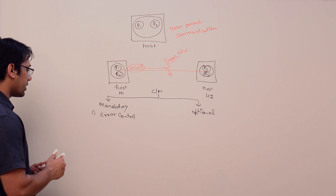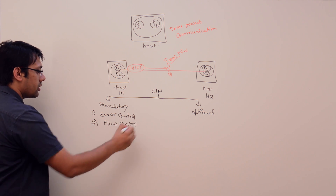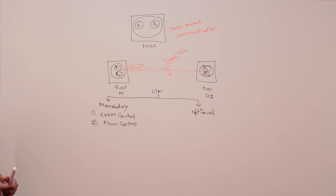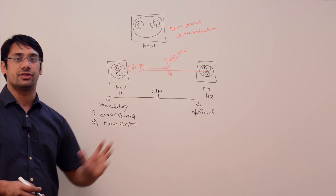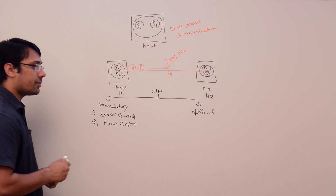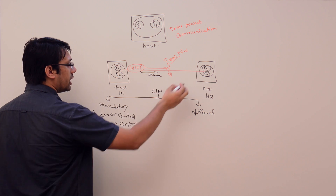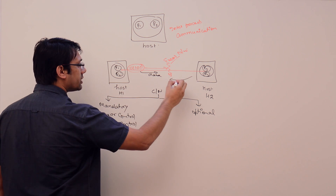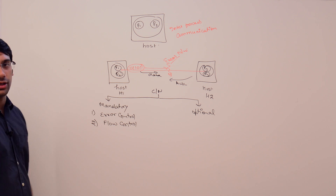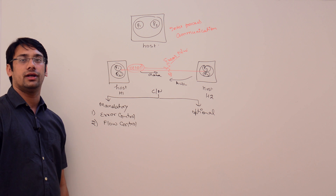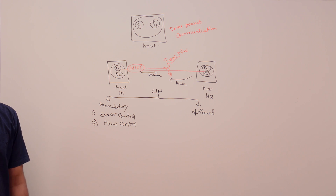The next important functionality is flow control. Flow control deals with how information travels and how you ensure it is successfully delivered. For example, P1 sends a data packet to P3; P3 receives it and sends an acknowledgement back to P1. After P1 receives that acknowledgement, it can be sure the packet was received and then send the next one. That is called flow control.